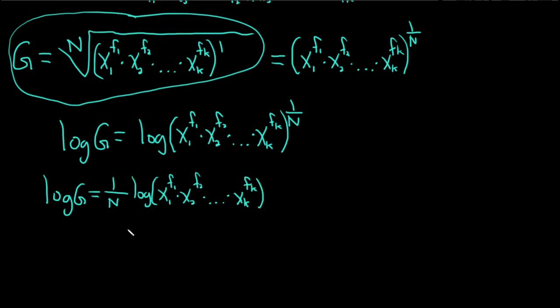Now we can use something called the product rule for logs. Remember, if you have the log of ab, that's the log of a plus the log of b. Same thing here, except we have k terms, so we're going to have k terms in our sum. This is 1 over N, parentheses, log of x1 to the f1 plus log of x2 to the f2 plus dot dot dot plus log of xk to the fk.